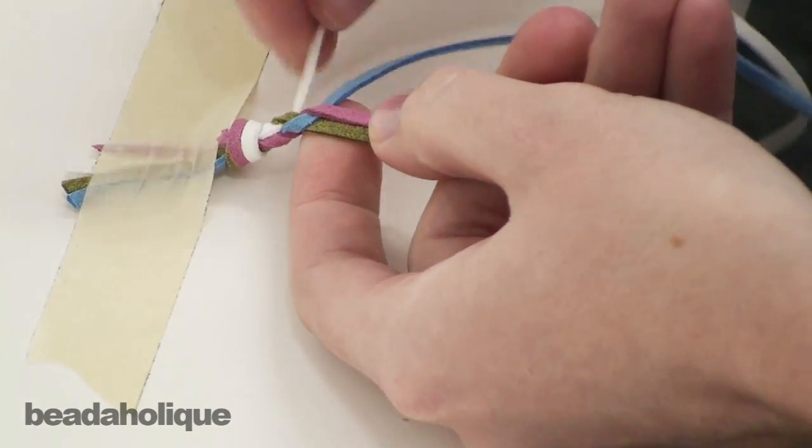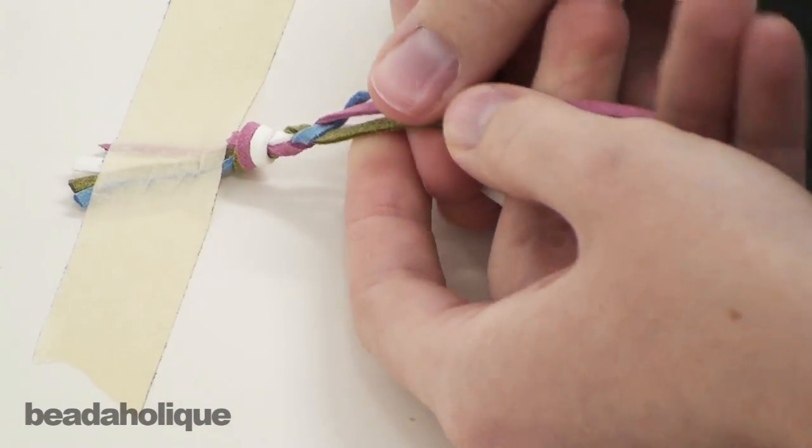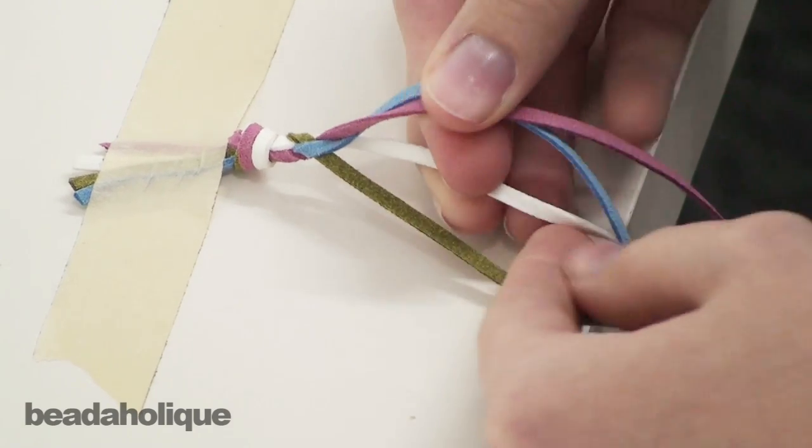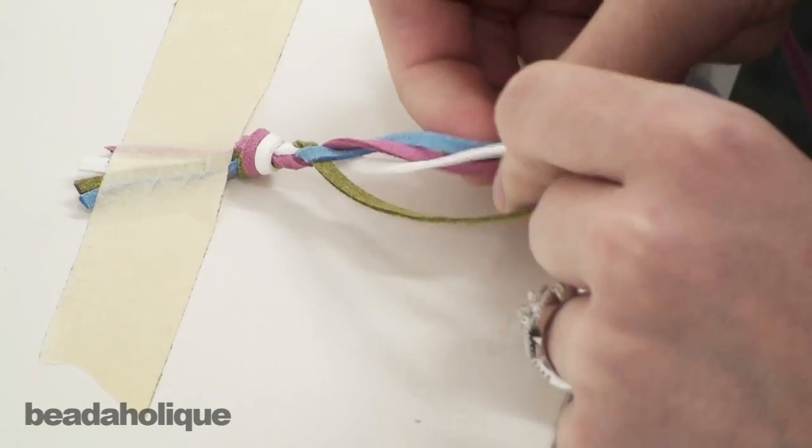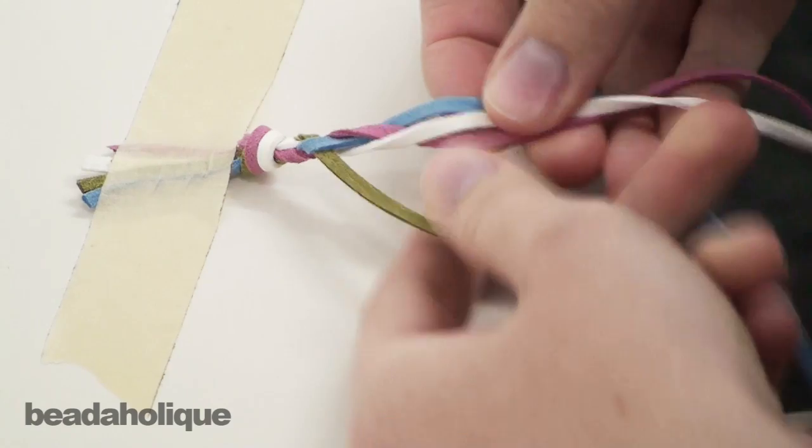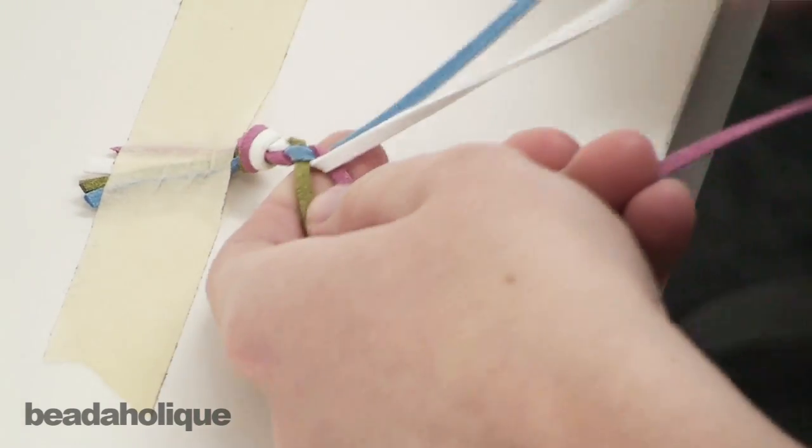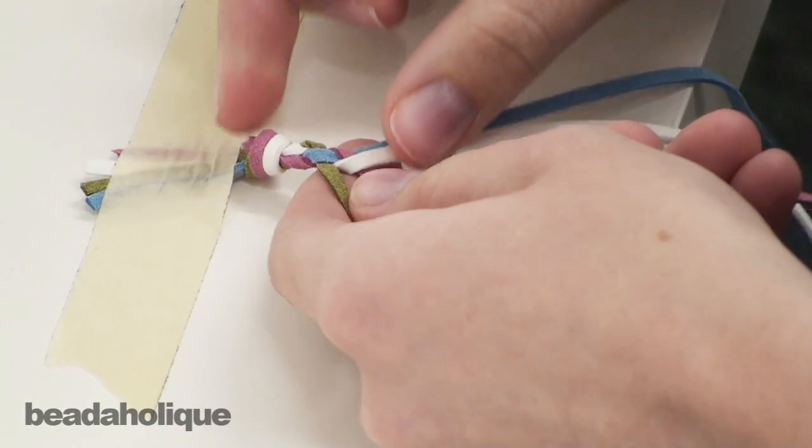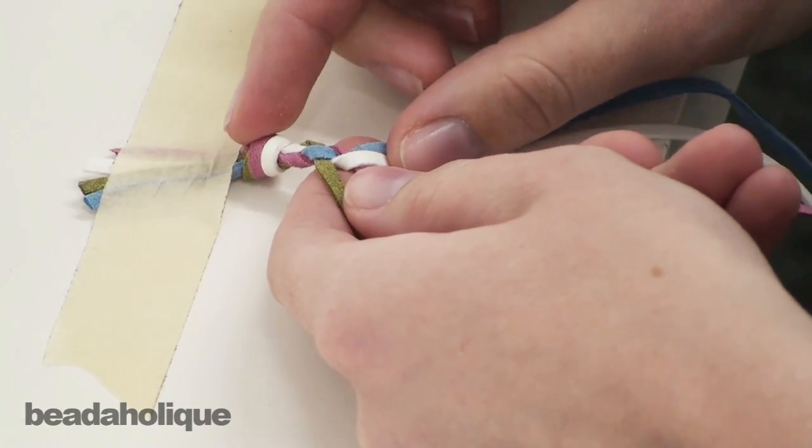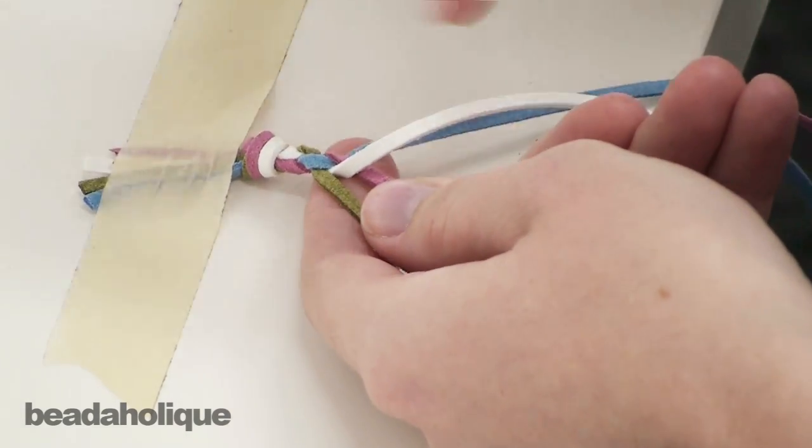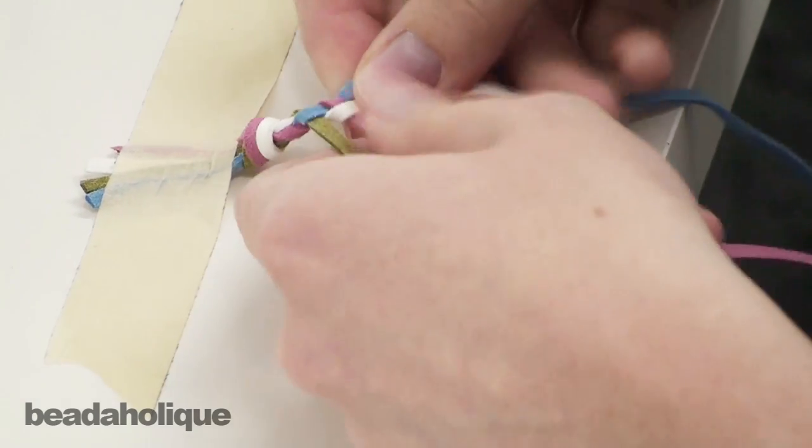Then you take the right piece and you bring it back around the middle two and then between them. Pull that tight. The first length is going to look kind of wonky, so you'll go ahead and you'll just cut that off later. Don't worry about it.